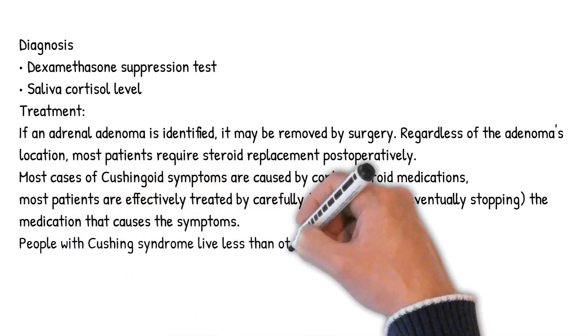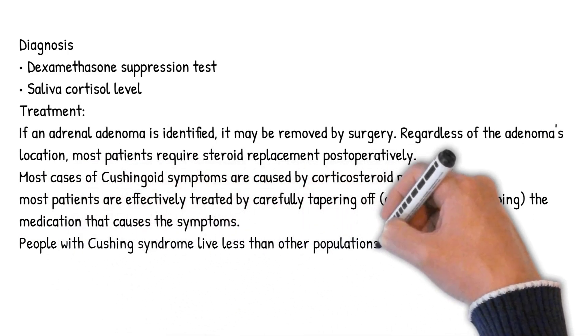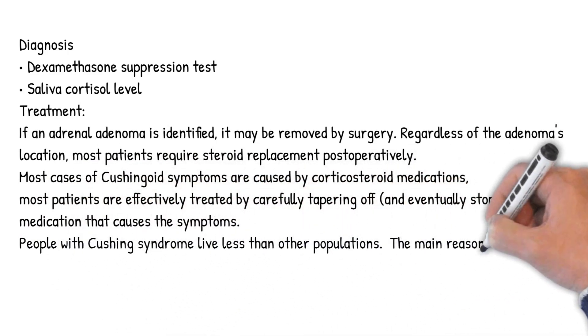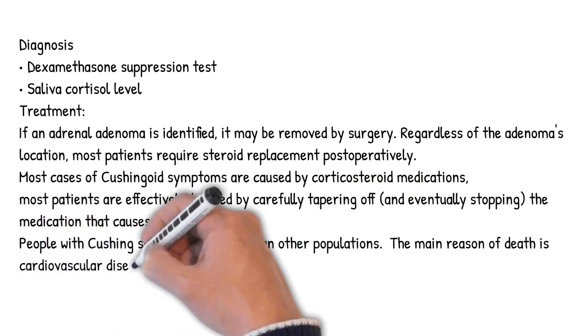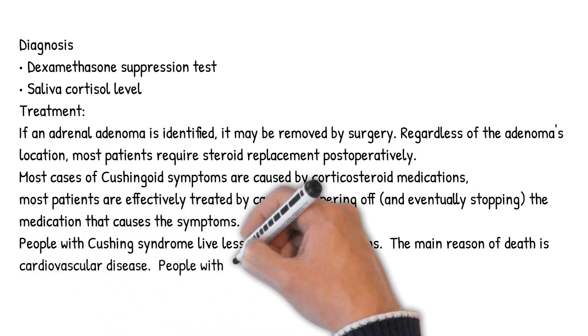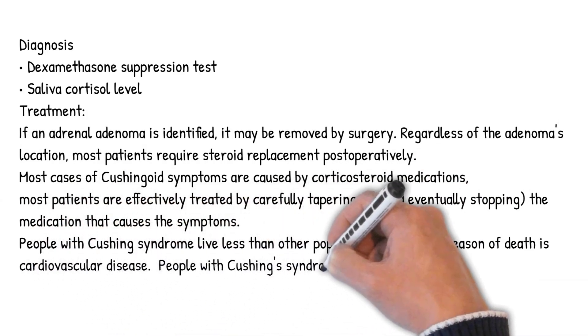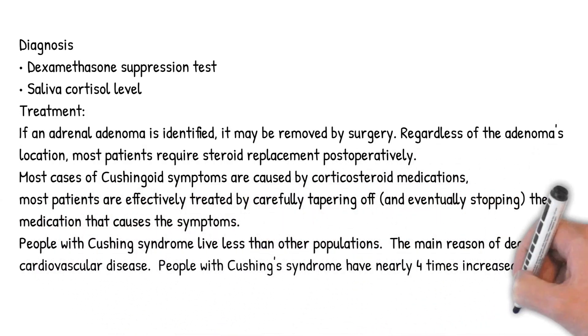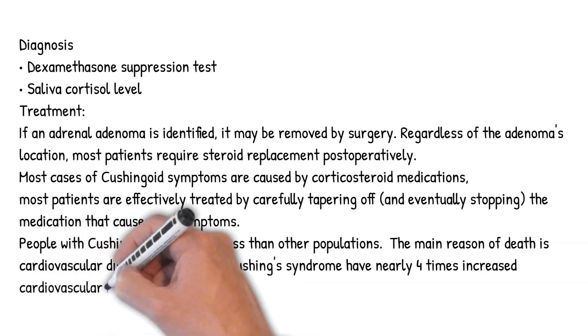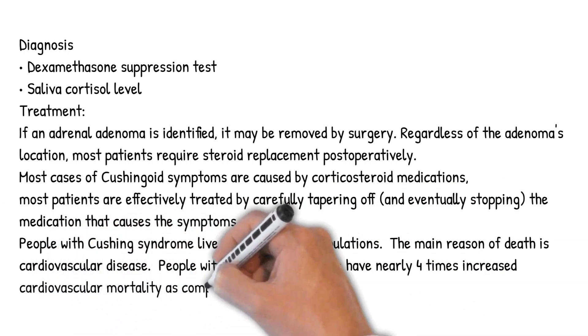People with Cushing's syndrome live shorter lives than other populations. The main reason for death is cardiovascular disease; people with Cushing's syndrome have nearly four times increased cardiovascular mortality compared to the general population.